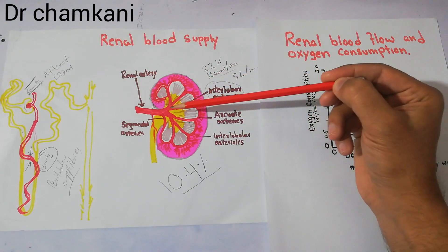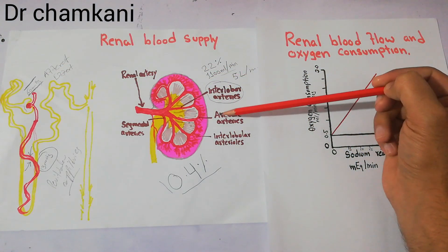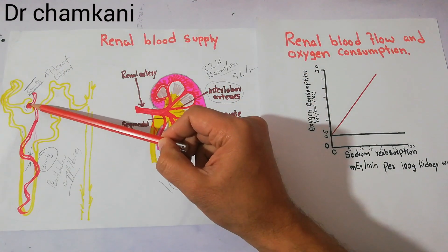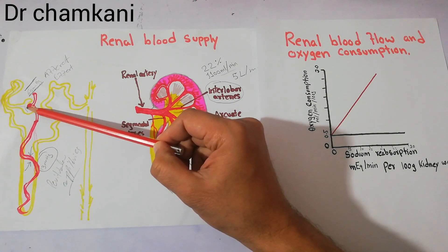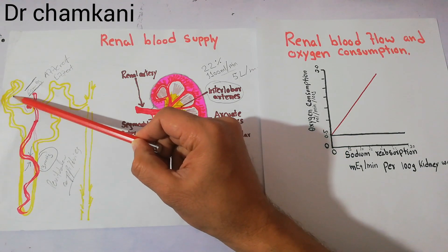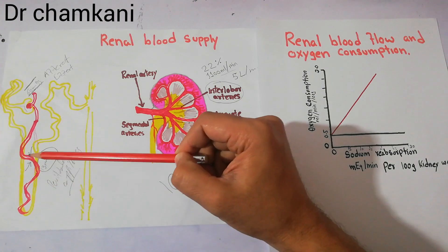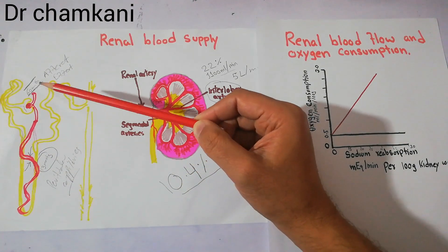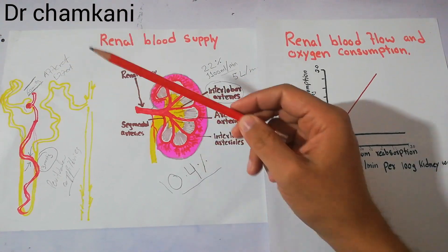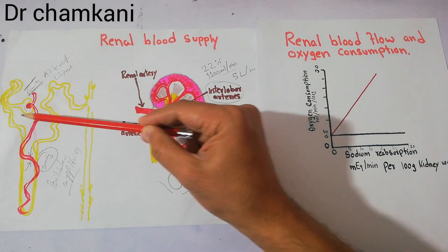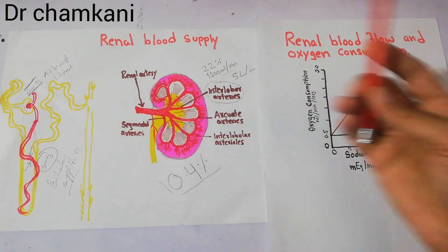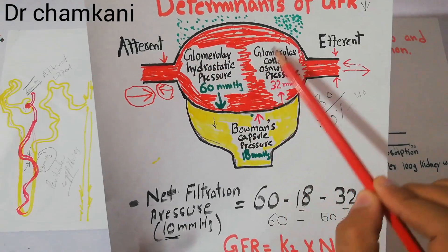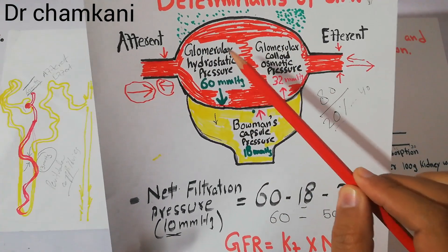The renal artery enters the kidney and divides into different arteries and then arterioles. At the level of the nephron, it forms the afferent arterioles which bring blood into the glomerulus, where filtration occurs. The filtrate then moves to the renal tubules, which is essentially the urine formation process. The pressure and flow with which blood enters the glomerular capillaries is very important for filtration.